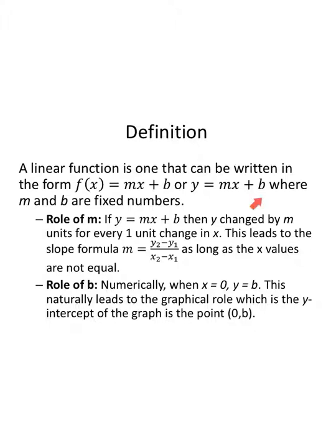The b value in our equation: when x is zero, zero times m is zero, and zero plus b gives me b. So when x is zero, y is just b. This leads to the graphical role: the y-intercept is the point (0, b). We call this the slope-intercept form because it tells us the slope and the y-intercept of the graph.